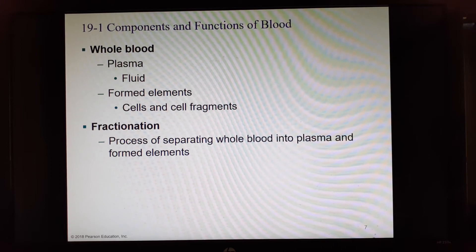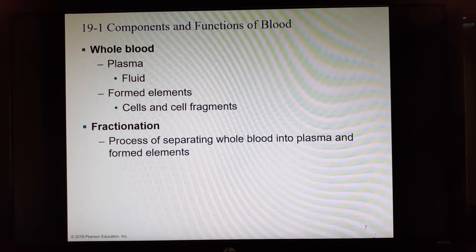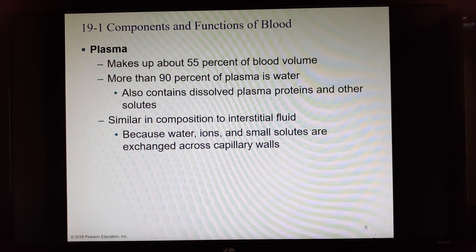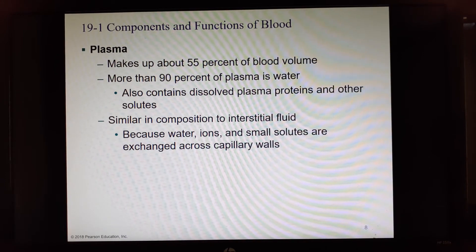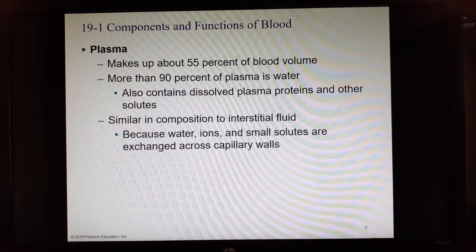Fractionation is when we separate cells from plasma by spinning blood in a centrifuge. The cells are heavier and go to the bottom; plasma is the top layer. Plasma is a little more than half the blood volume — about 55%. Most of plasma is water, but it has many dissolved proteins, keeping a composition similar to interstitial fluid.